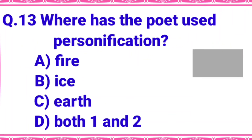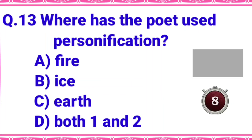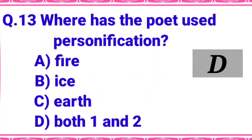Where has the poet used personification? Option A: fire, B: ice, C: earth, or D: both 1 and 2. Your time starts now. The right answer is option D - both 1 and 2. The poet has personified both fire and ice.